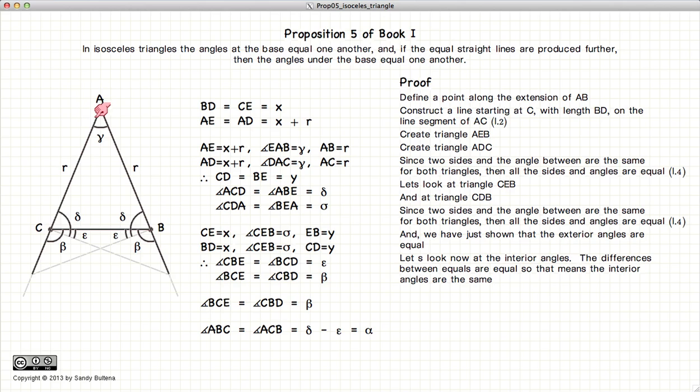So this angle ACB and ABC, both of them are equal to delta minus epsilon. Consequently, they're both equal, and we have demonstrated that these two angles are equal. It's a little bit complicated, but there you have it, folks.